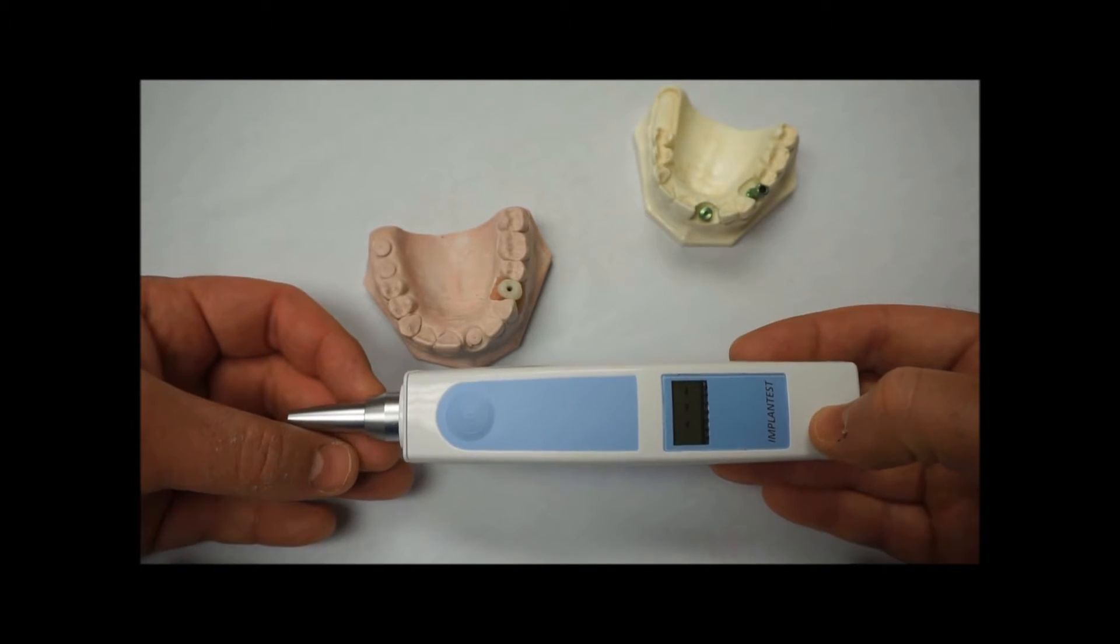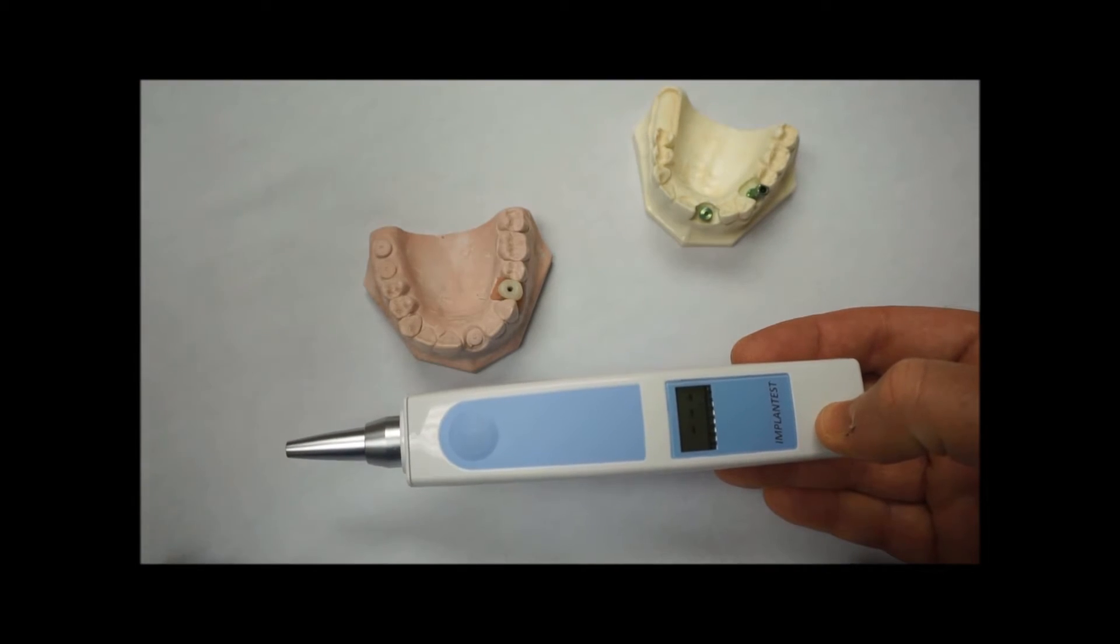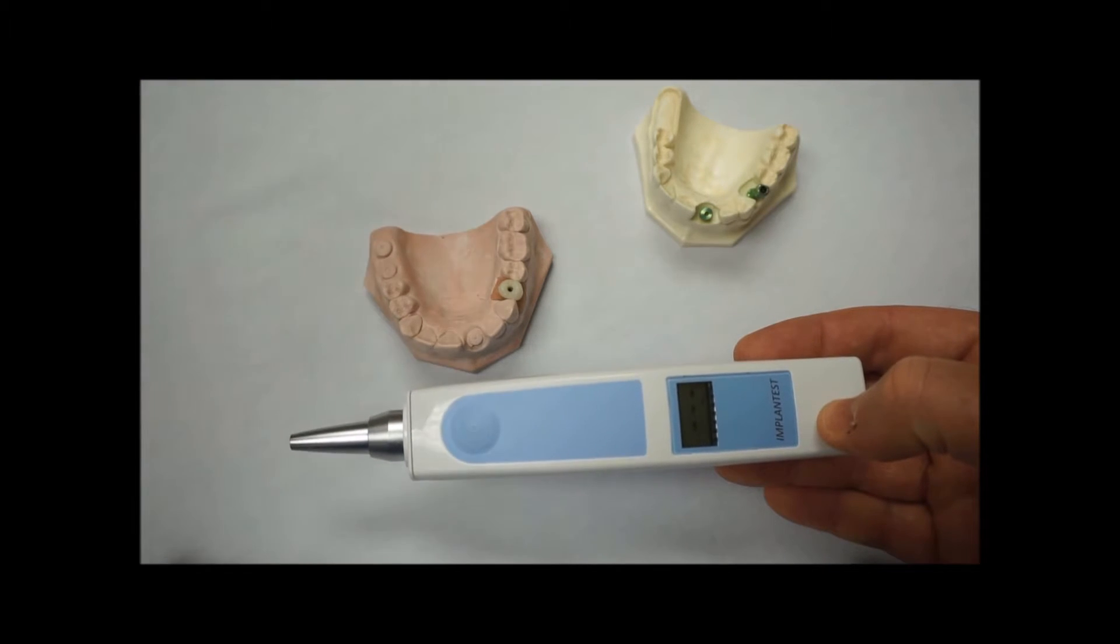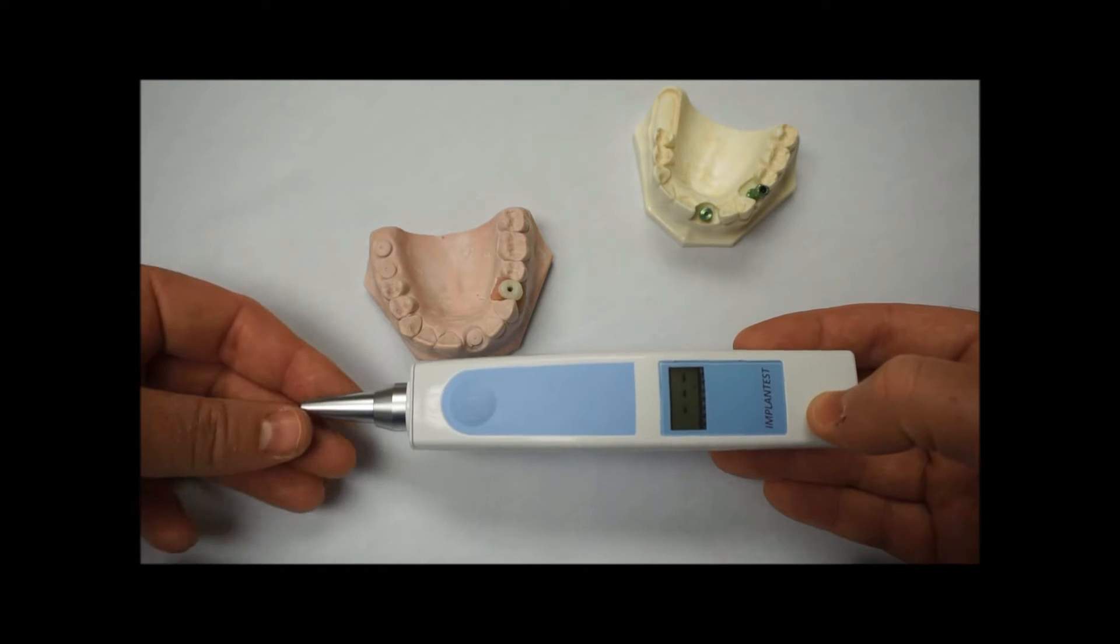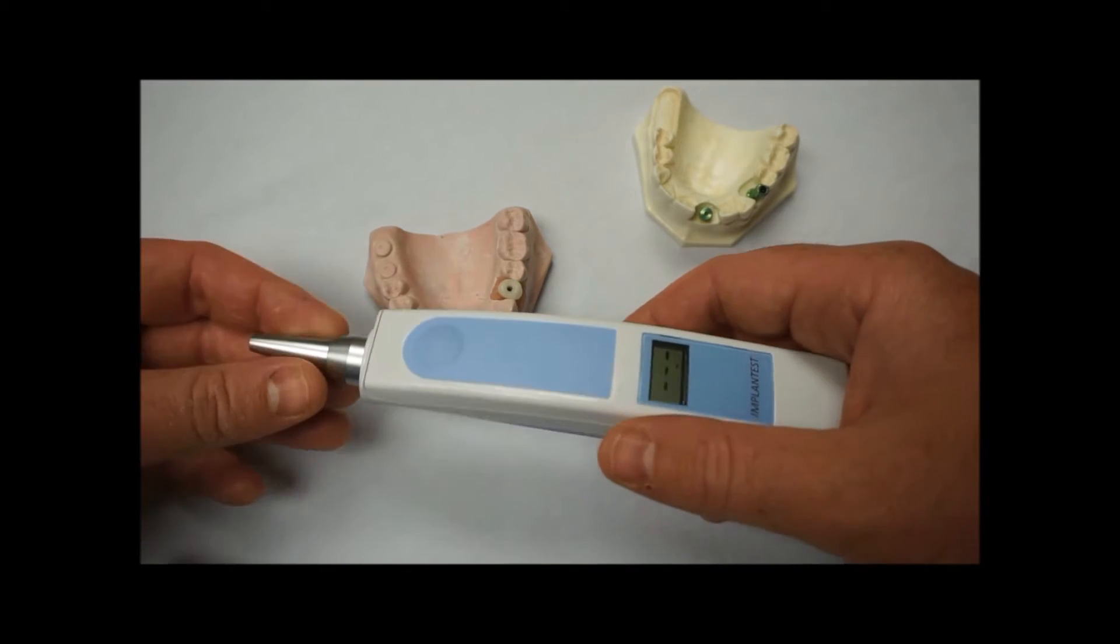So if you want to track an implant over time from the day you deliver a crown, and see what it looks like every six months to know that things are going okay and that the stability is not going down, you can definitely do that.